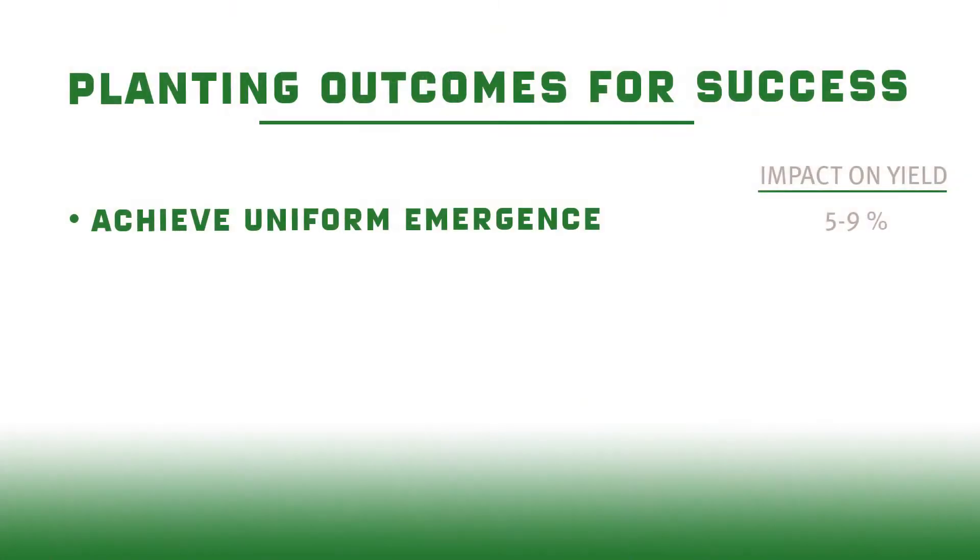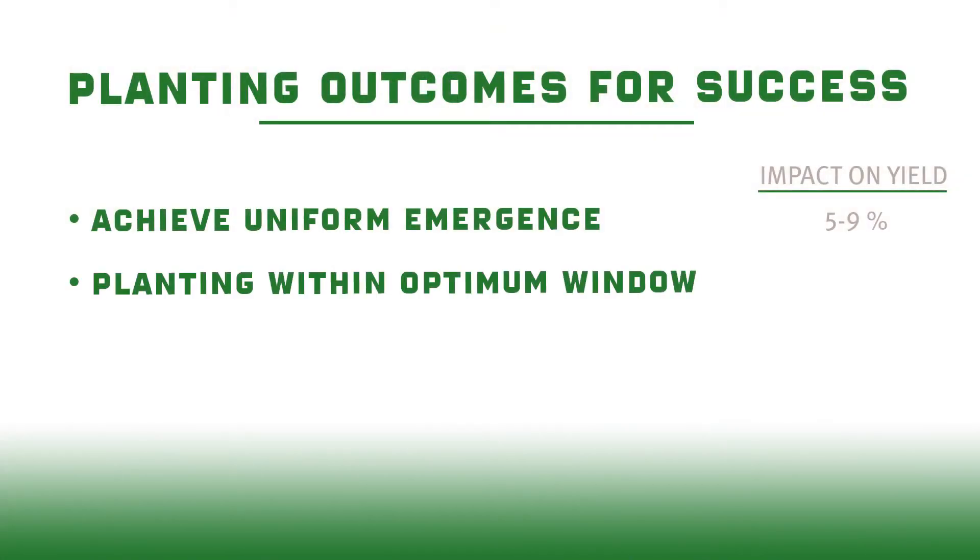A lot of growers think that you have to have plants emerge within hours of each other to limit yield variability. We find that as long as plants emerge within 48 hours of one another, we're probably in good shape. The second factor is planting within the optimum window, which is dictated mostly by weather. We want to plant as early as we can and still get plants established to make sure we use the whole growing season.